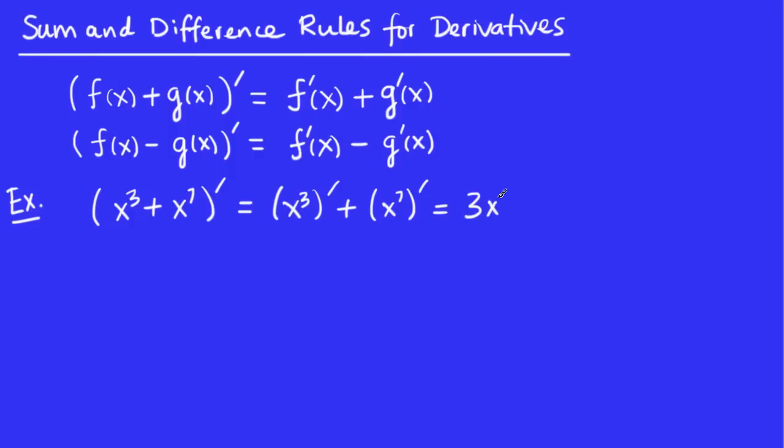And that's 3x squared plus 7x to the 6. The way I got that is, of course, I used the power rule two times here. One with n being 3, so the 3 comes to the front, and I do 3 minus 1 is 2. Then I use the power rule again with n being 7. The 7 comes to the front, and 7 minus 1 is 6.